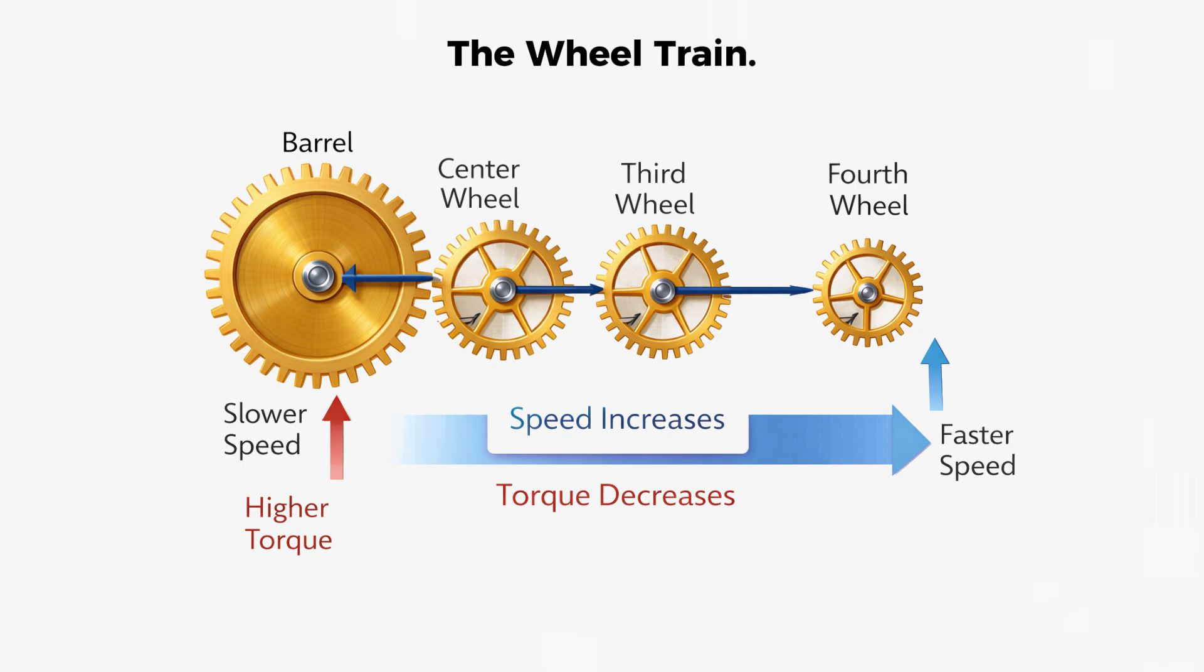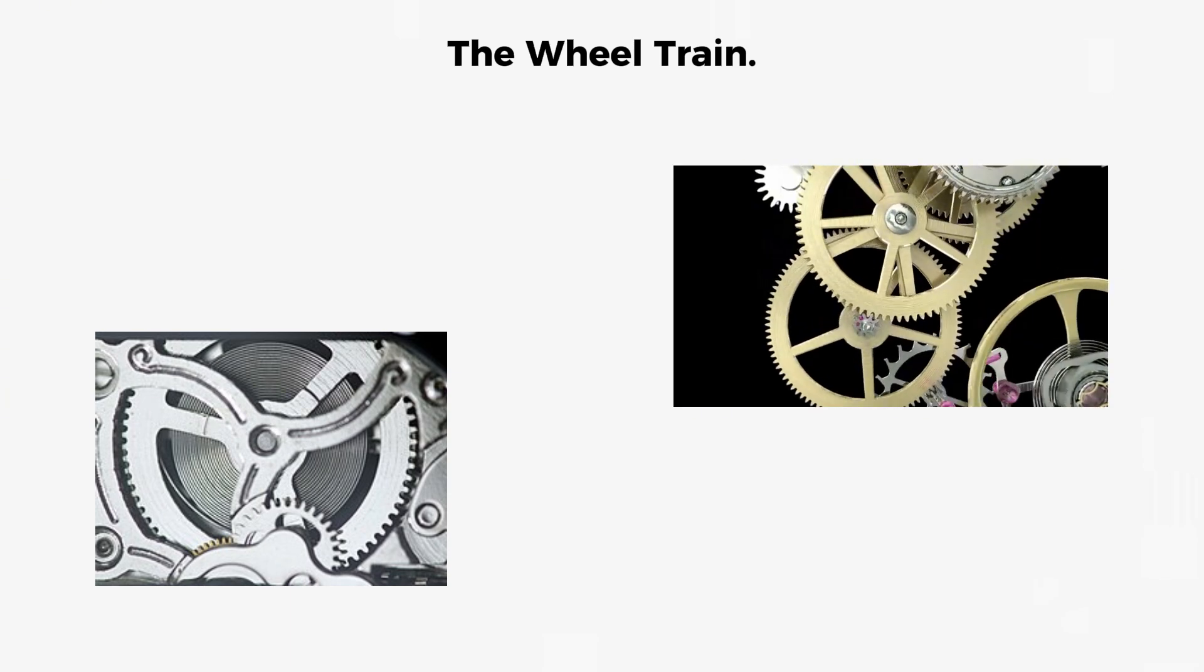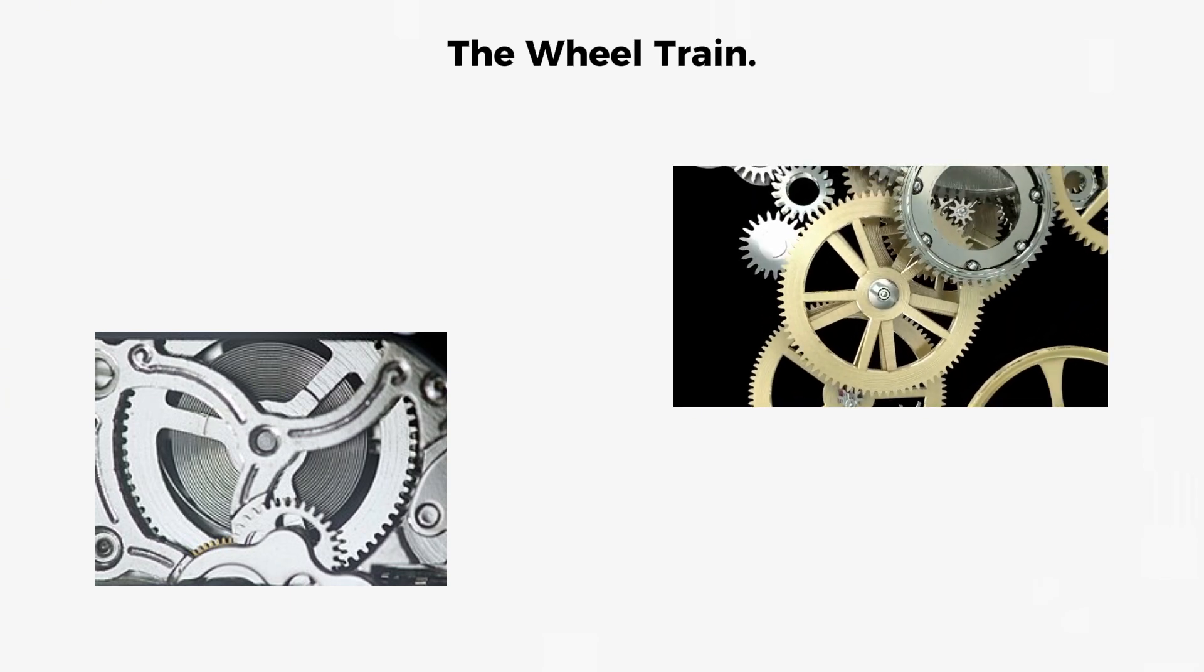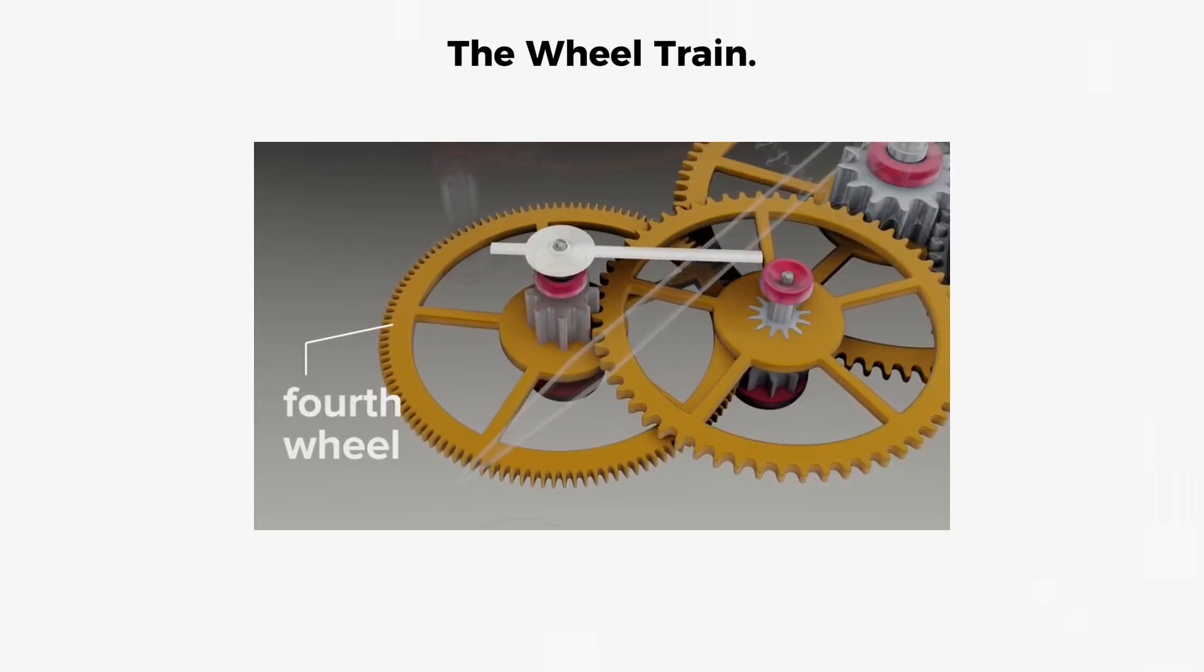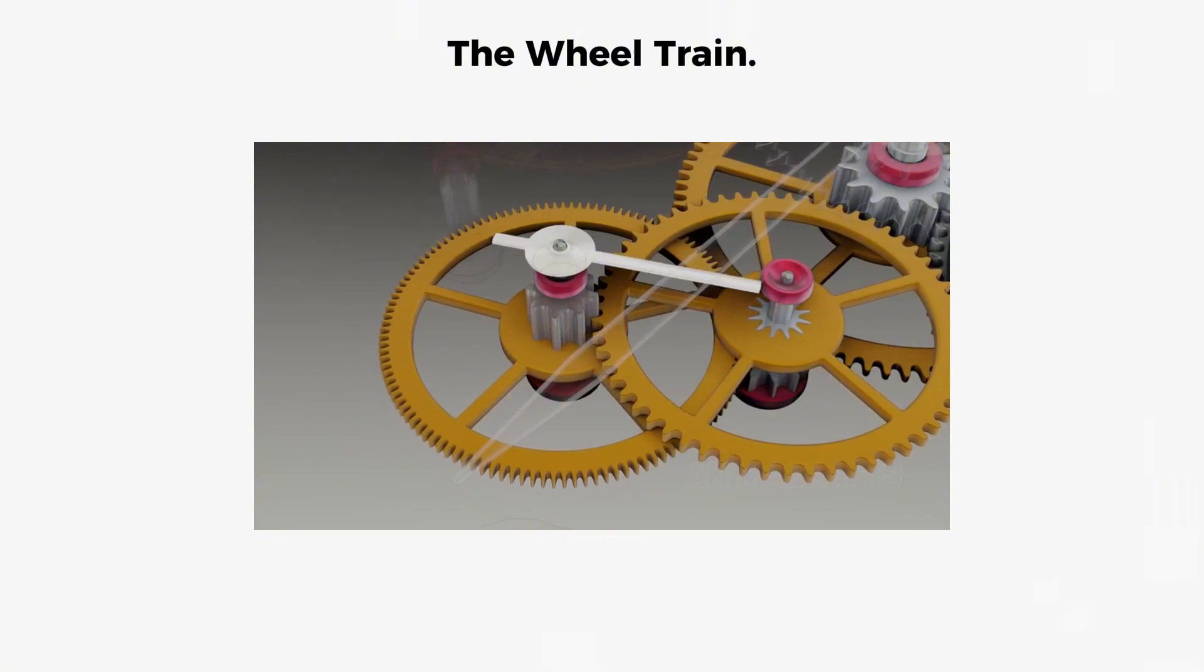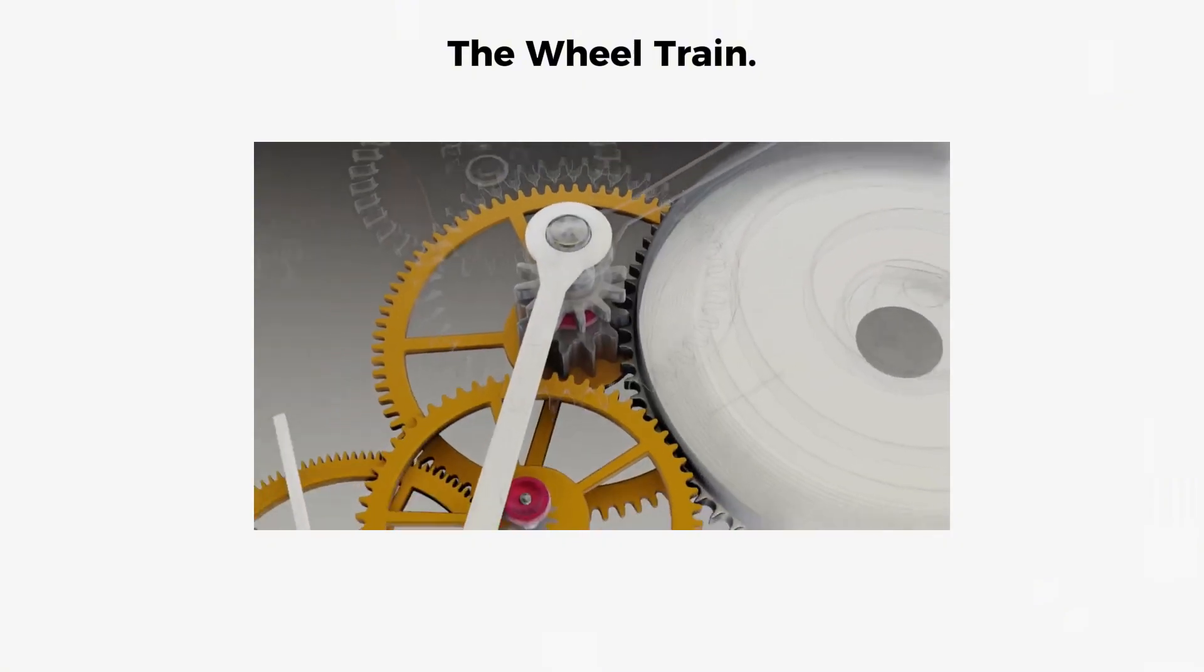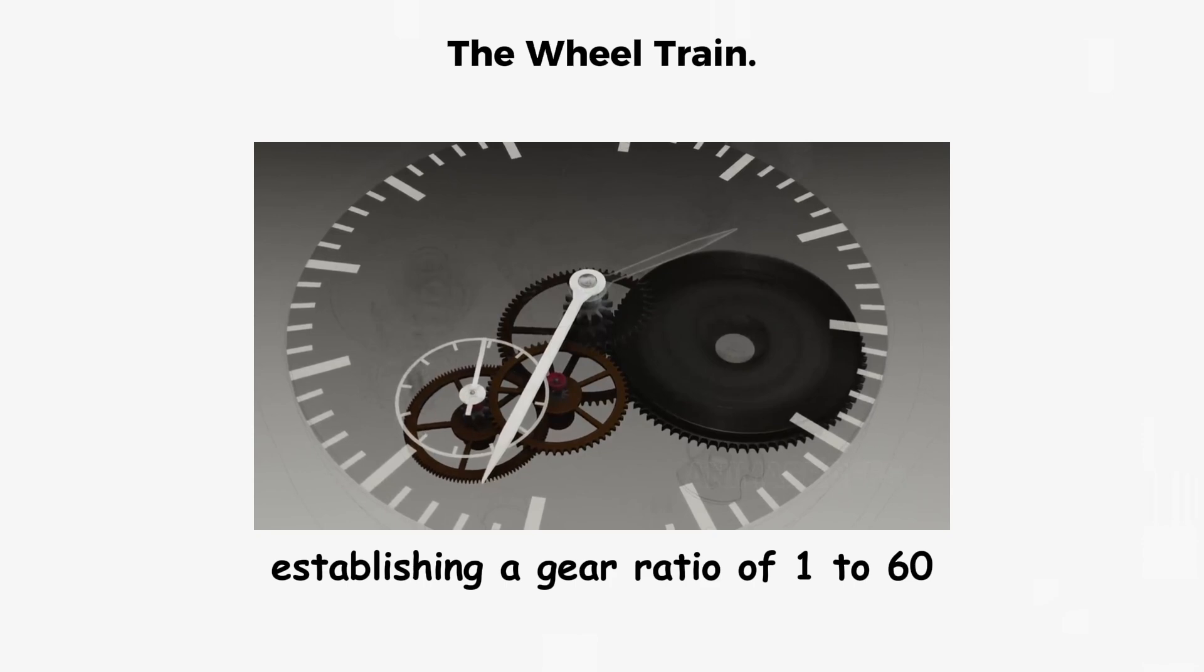This cascading gear system amplifies speed while reducing torque. The mainspring barrel rotates very slowly with high force, but by the time power reaches the fourth wheel, it is spinning much faster with less force. A typical setup might have the fourth wheel completing 60 rotations for every single rotation of the center wheel, establishing a gear ratio of 1 to 60.